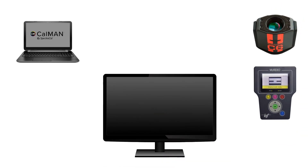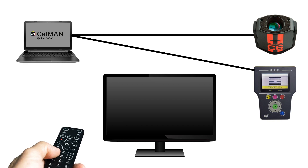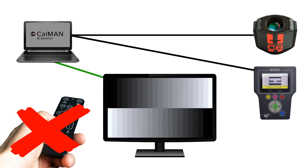Calman is designed to work with every light meter and pattern generator commonly used by calibrators, and connection with hardware is simple. Calman also promotes efficiency by adjusting the TV from within the software, eliminating the need to use the TV remote control.